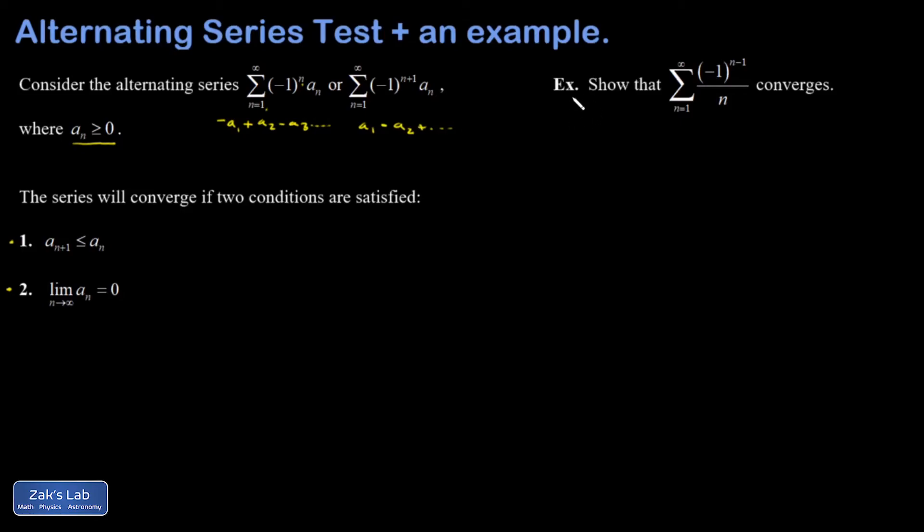So let's check out an example. In this example, I've handled the alternating signs in a slightly different way. I put an n minus 1 there. So if you plug in n equals 1, you get negative 1 to the 0, which is positive. So I'm starting with a positive term on this. This series actually has a special name. It's called an alternating harmonic.